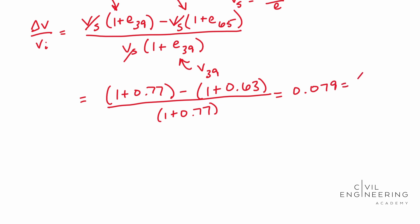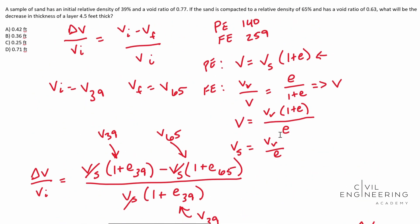We're going to find our change in height. Our Delta height is equal to 4.5 feet times this ratio 0.079. And you end up with 0.356 feet. And that looks like 0.36 feet. So that is your change in your height. And that's going to be B.